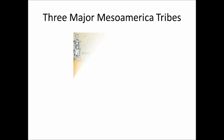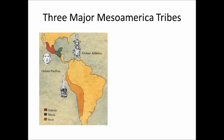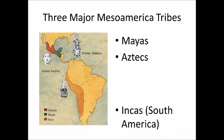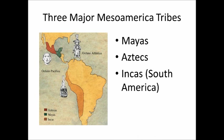The three major Mesoamerican tribes are the Mayas, the Aztecs, and the Incas. If you look at the map here, the red was current-day Mexico — that is where the Aztecs were. The green on the Yucatan Peninsula was where the Mayan civilization was located. And if you look at the orange on South America, the only South American tribe we talk about, the Incas, were located in the Andes Mountains.